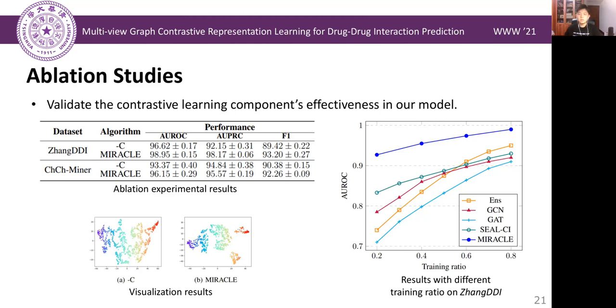Through visualization, we can notice that the contrastive learning component helps obtain better drug embeddings. We also compare our model with baselines on the DrugBank-DDI dataset with different training ratios. As shown in this figure, our method is more robust with less training samples.